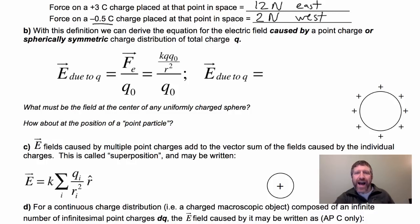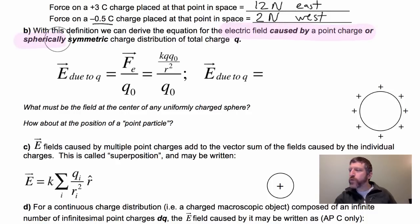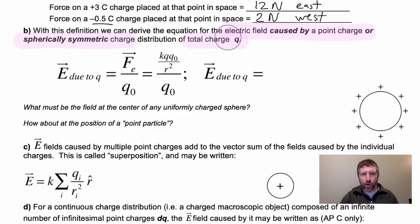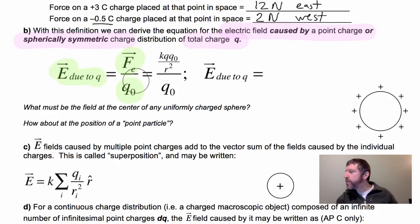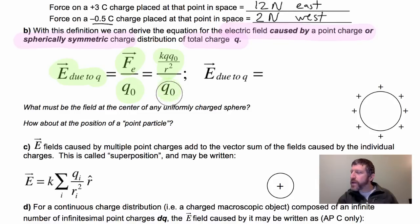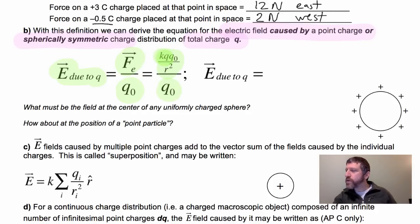We can now derive the equation for the electric field caused by a point charge — or it also works for a spherically symmetric charge of total charge q. By our definition, the electric field is force per unit charge. The force due to charge q on our test charge Q₀ is kqQ₀ over r squared. Dividing by Q₀, the Q₀ cancels and we get E = kq over r squared.